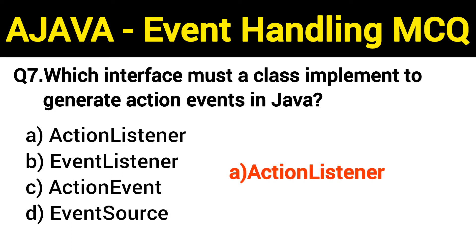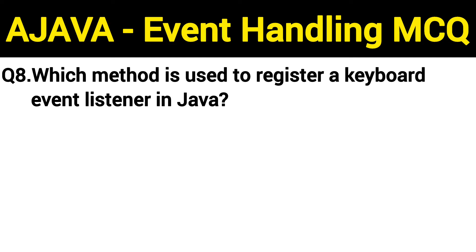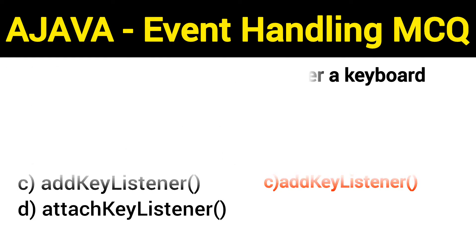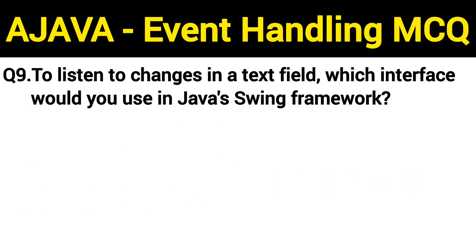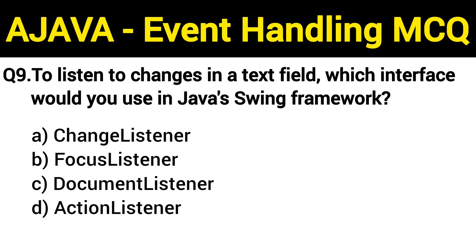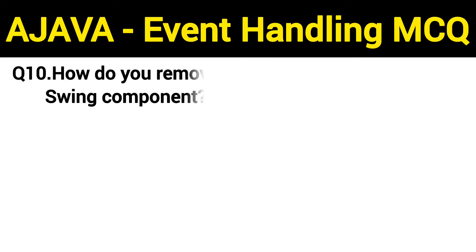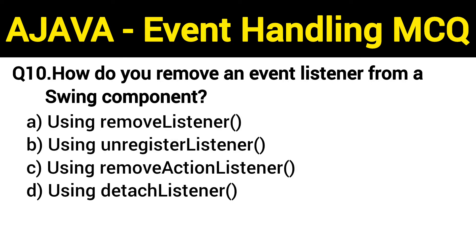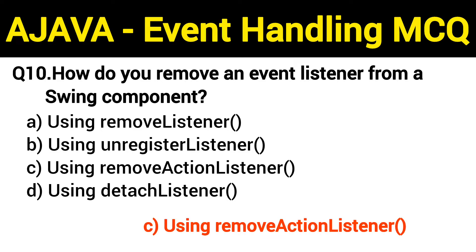Question number 7: which interface must a class implement to generate action events in Java? The right answer is option A: ActionListener. Question number 8: which method is used to register a keyboard event listener in Java? The right answer is option C: addKeyListener. Question number 9: to listen to changes in a text field, which interface would you use in the Java Swing framework? The right answer is option C: DocumentListener.